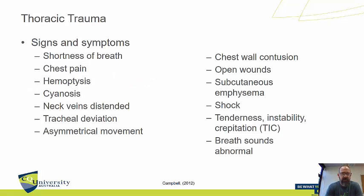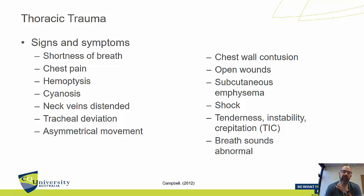Here are some of the signs and symptoms you may find with chest injuries. It's important to understand what each term means — we'll contextualize them when we discuss each individual chest injury type. Shortness of breath: patients will be struggling to breathe. Chest pain: damage to the chest causes pain. Hemoptysis: coughing up blood. Distended neck veins: referring primarily to the jugular veins — some pathologies cause them to distend or conversely flatten out. Tracheal deviation: a deviation of the trachea left or right — hard to identify without X-rays and not something you'll typically see pre-hospital, but important to understand.